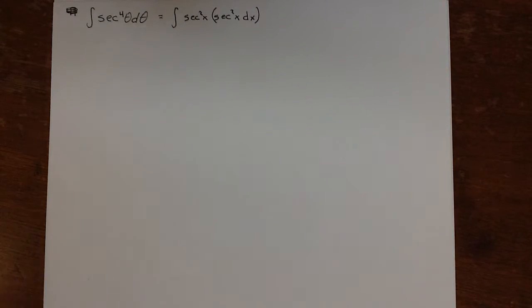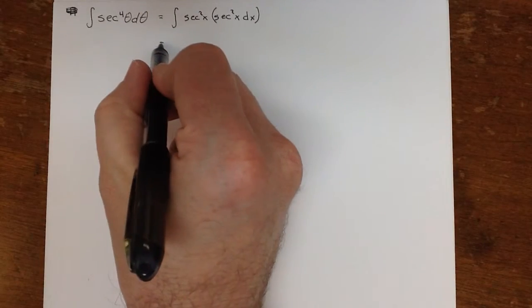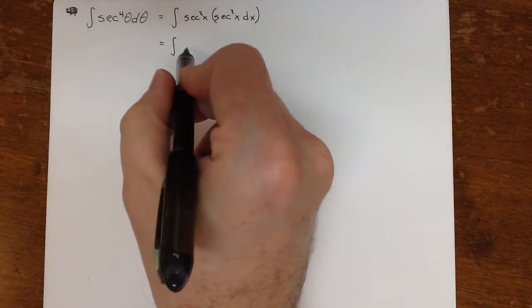Now, from the Pythagorean identity, we know that secant squared is equal to tan squared plus 1.